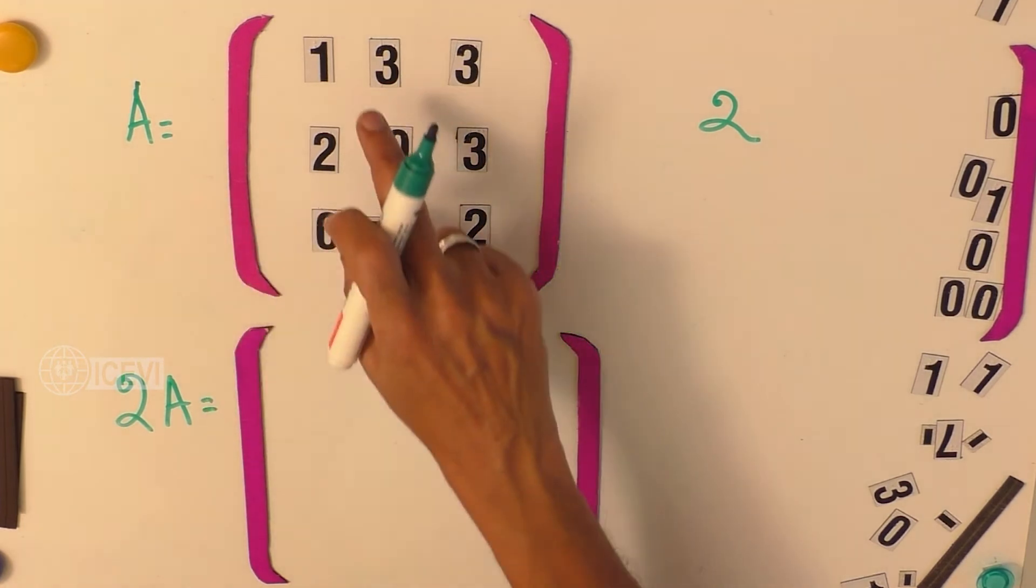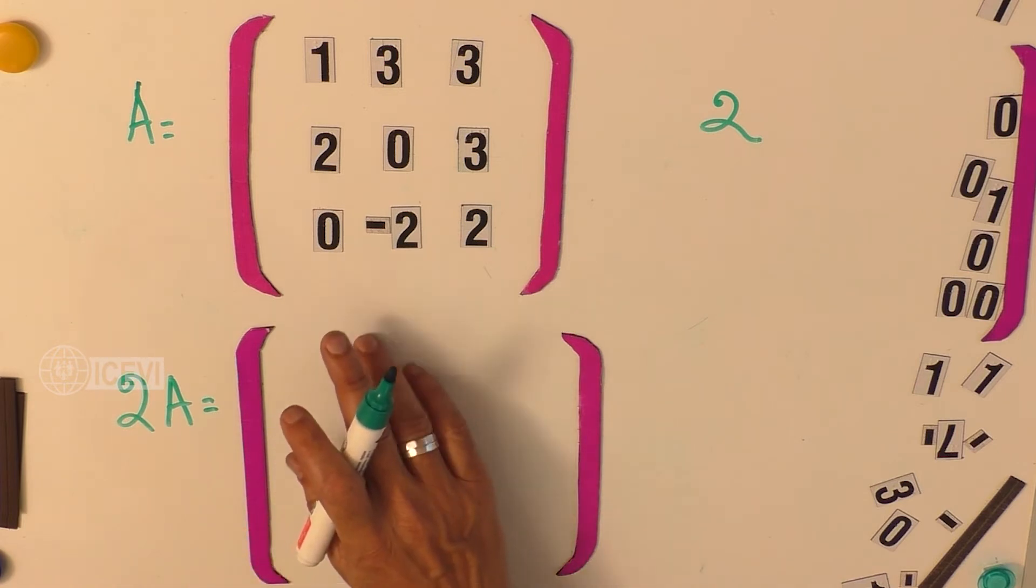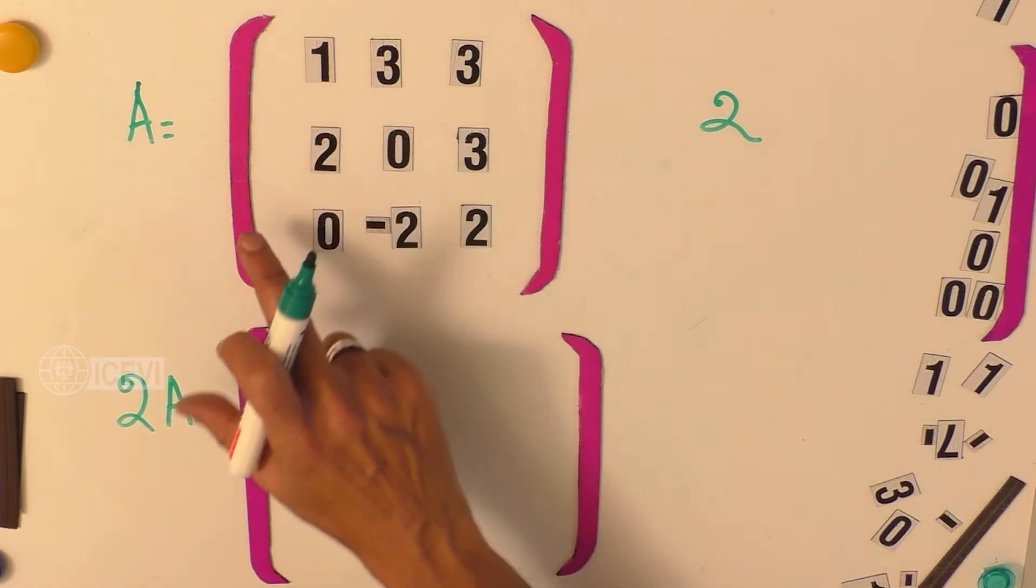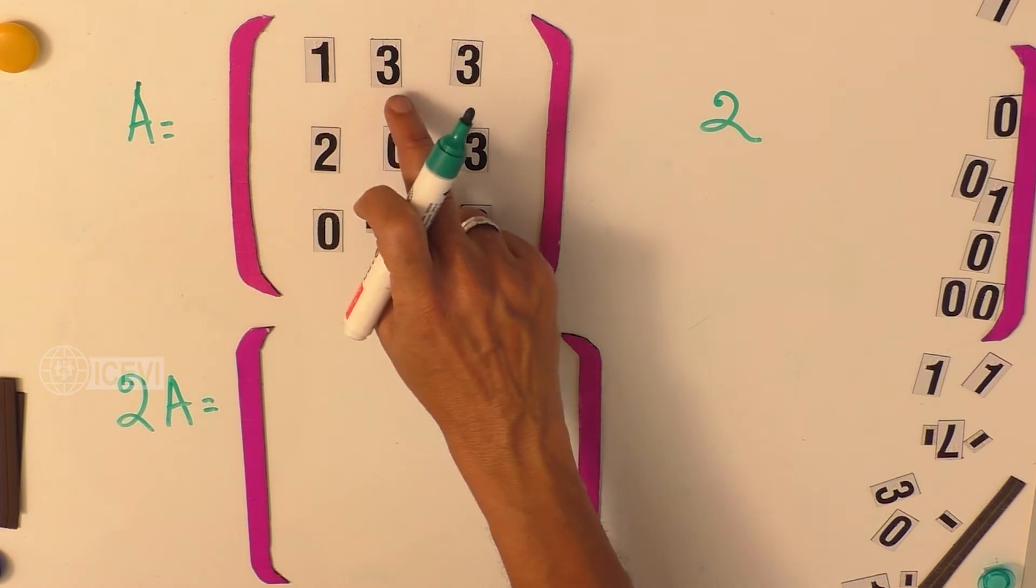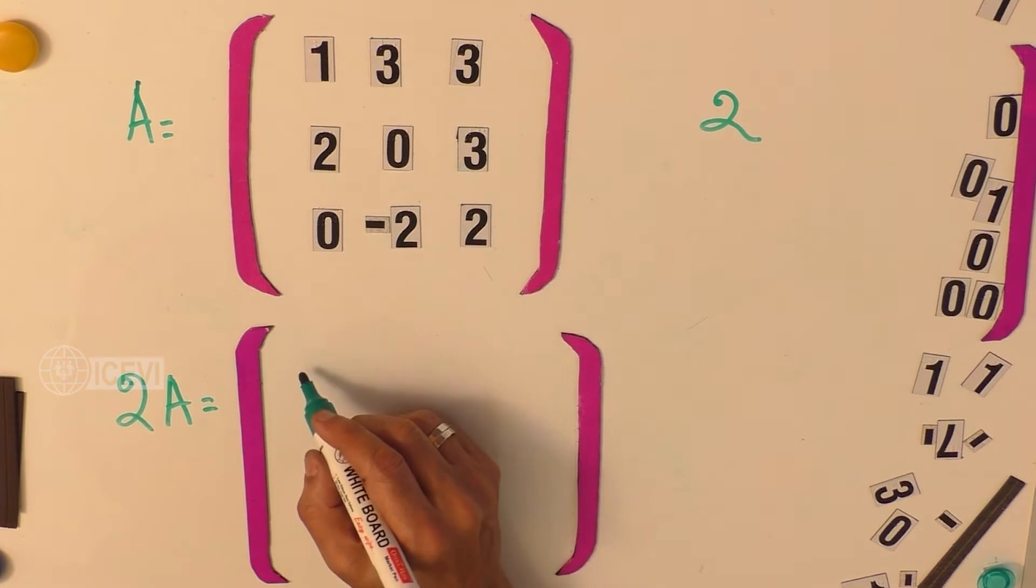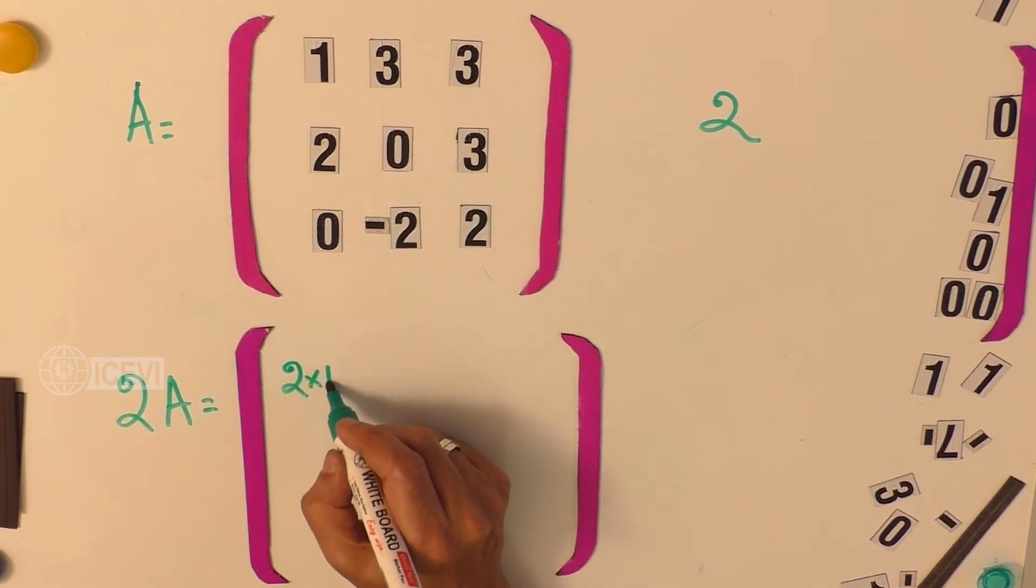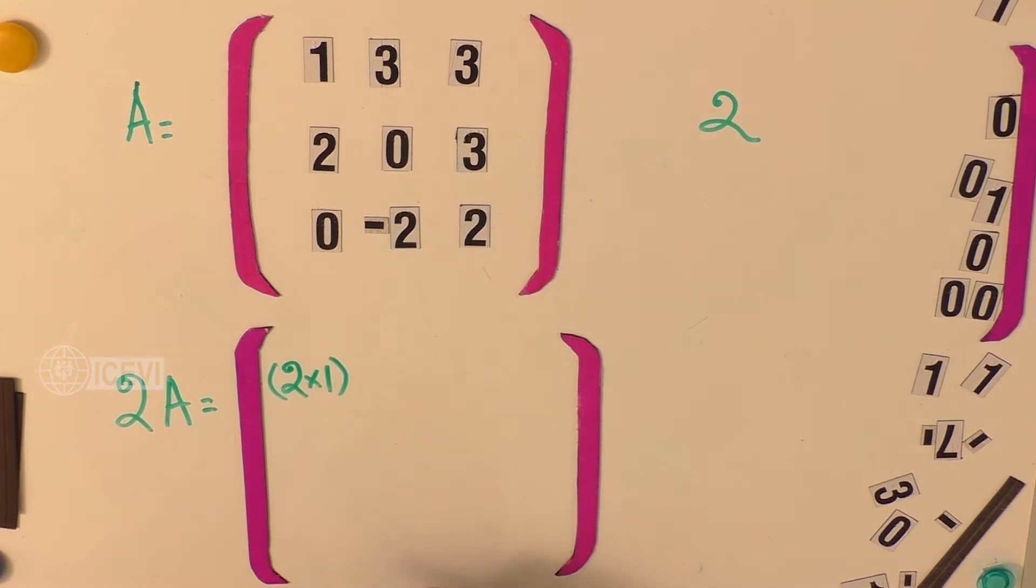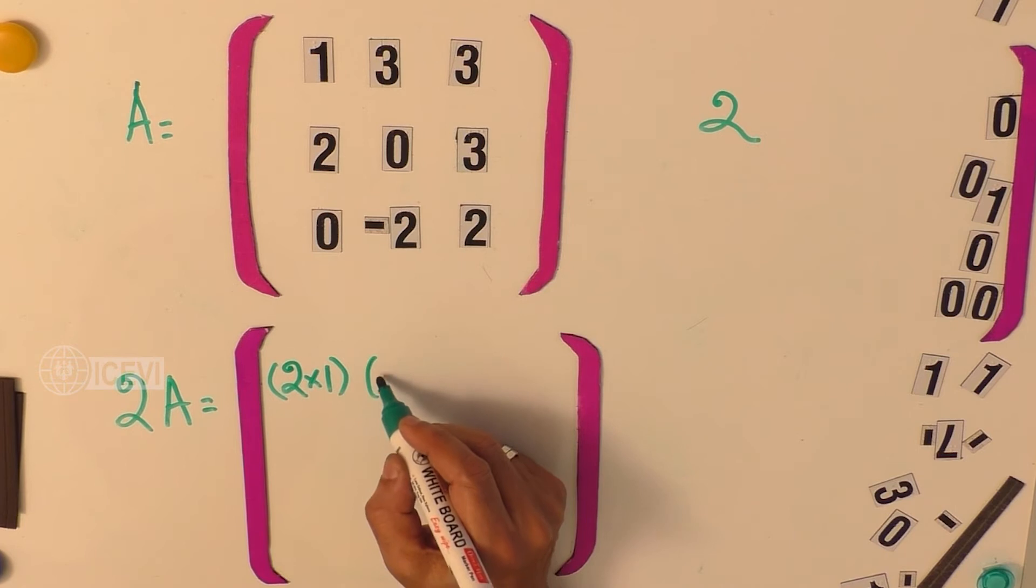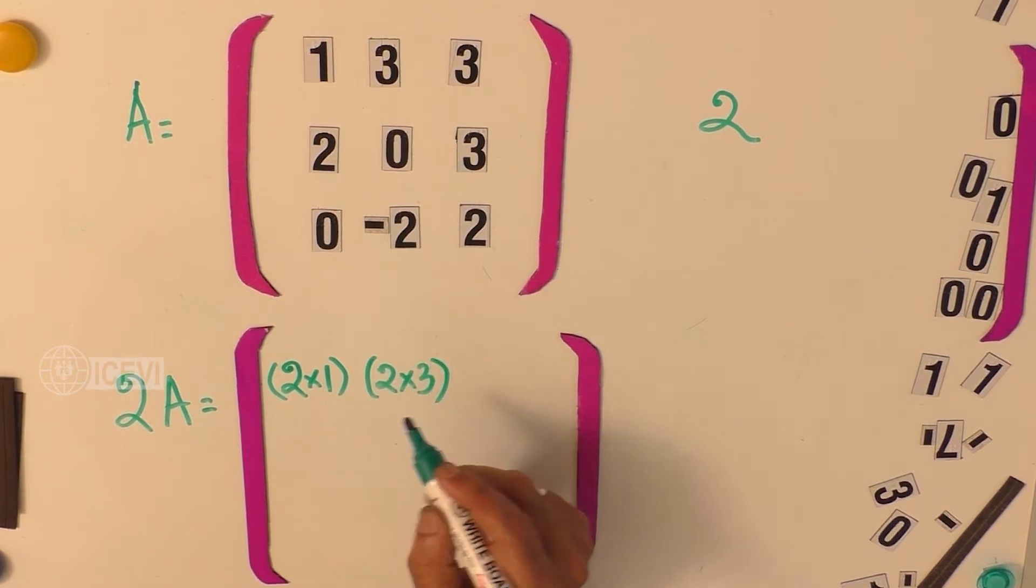We have to multiply this matrix by number 2. It is nothing but multiplying every element of the matrix by that particular number. We have to multiply 2 by 1, that is the first element of the new matrix. Second, you have to multiply 2 by 3. It is simple multiplication.